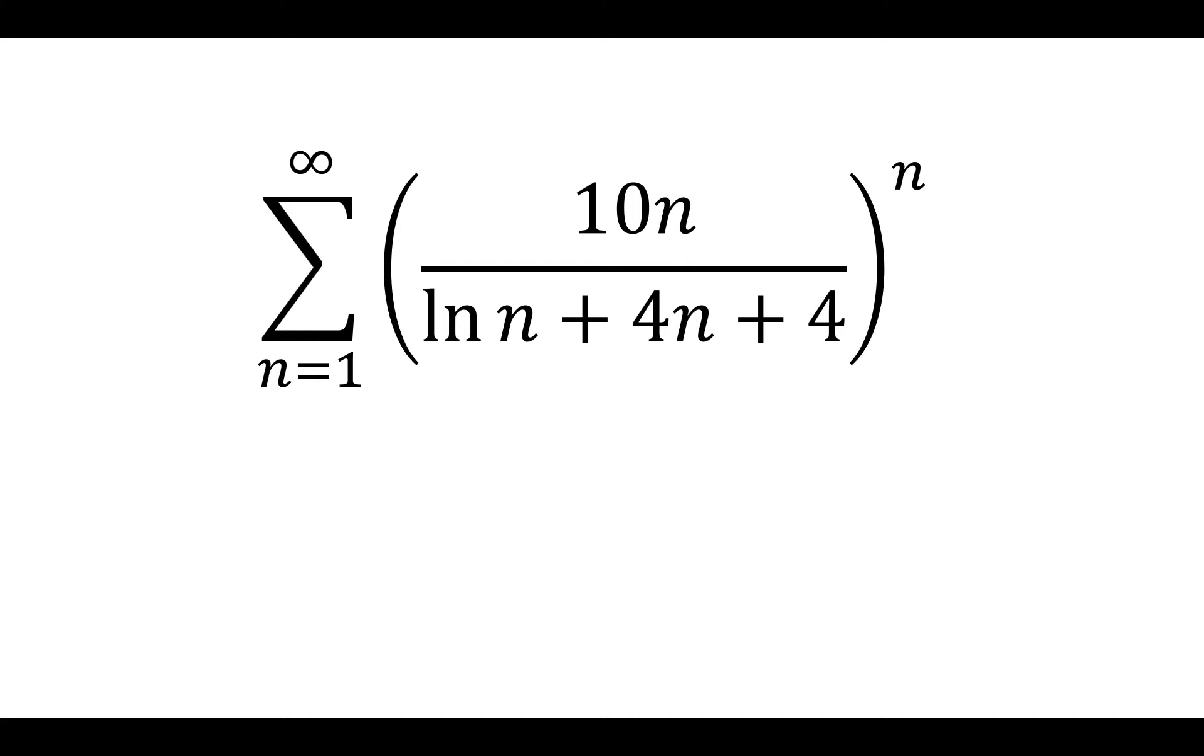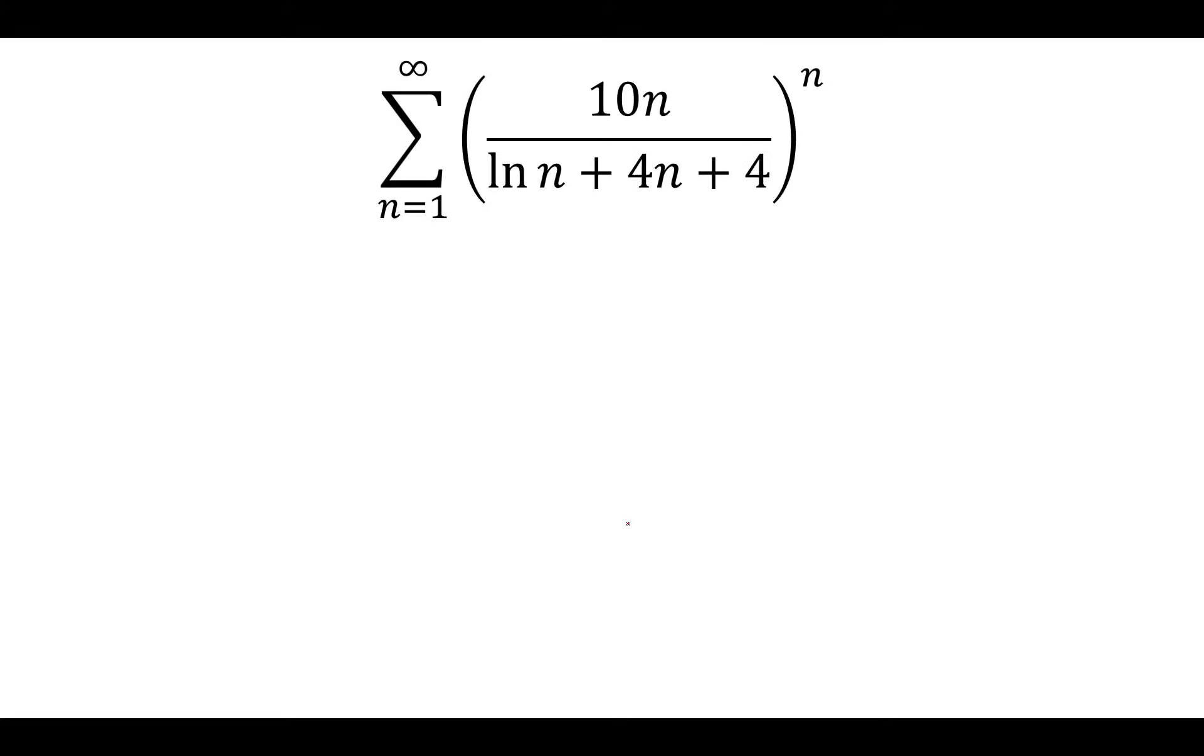We're given the sum from n equals 1 to infinity of 10n over natural log of n plus 4n plus 4 raised to the nth power. Let's see whether this converges or diverges.